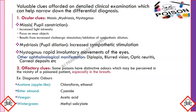Olfactory clues: some poisons have a distinctive odor which may be detected in the vicinity of a poisoned patient, especially in their breath. Examples of diagnostic odors include: acetone — apple-like smell from chloroform or ethanol; bitter almond — from cyanide; vinegar — from acetic acid; wintergreen — from methyl salicylate.